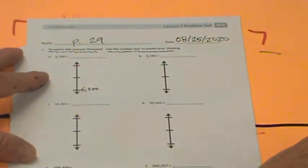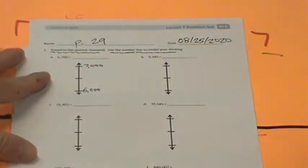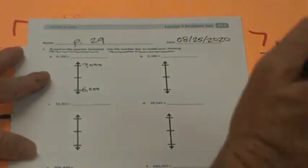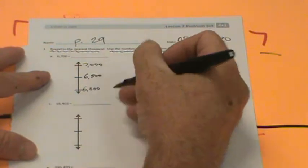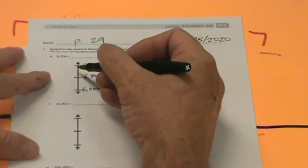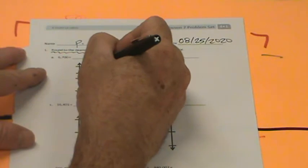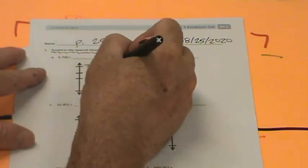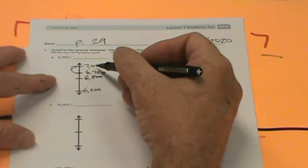What's the midway point between 6,000 and 7,000? It's 6,500 because 500 is the midpoint between thousands. We have 6,700. Is 6,700 greater than 6,500? You bet it is, so we're going to round this up to 7,000 because it's closer to 7,000 than it is to 6,000.